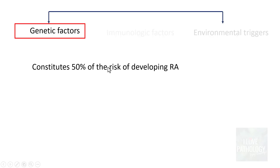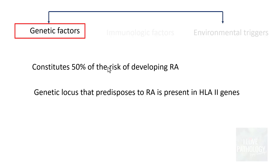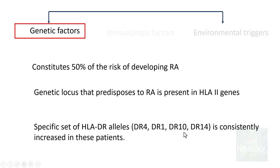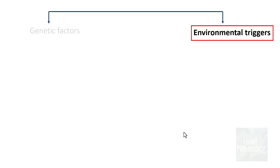The factors causing this failure can be classified as genetic factors and environmental triggers. Genetic factors constitute around 50 percent of the risk of developing rheumatoid arthritis. The relevant genetic loci are in HLA class 2 genes, specifically HLA-DR4, HLA-DR1, HLA-DR10, and HLA-DR14, which are consistently increased in these patients.